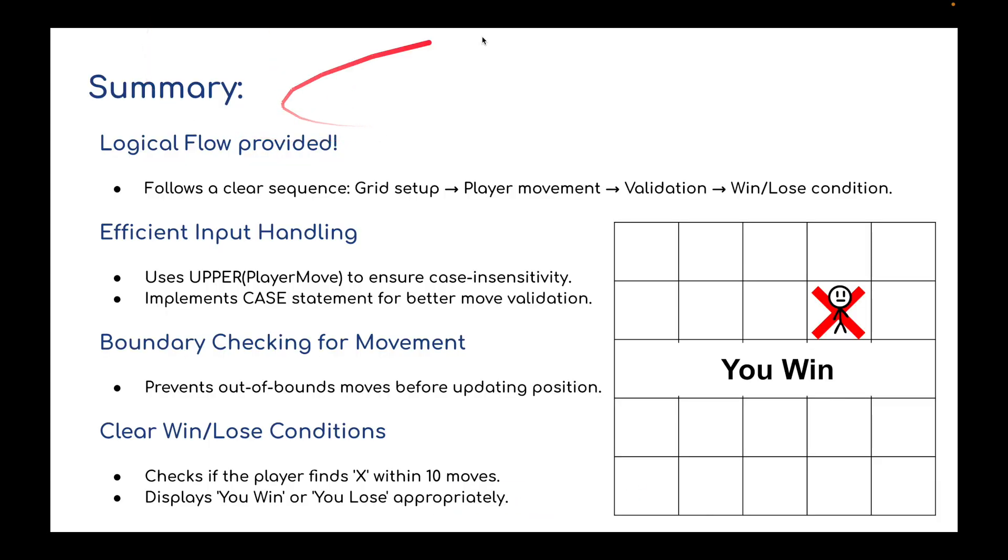Let's just summarize this. We provided a logical flow. Follows a clear sequence. The grid was set up, the player's movements were set up, validation in terms of how the player can move, and then a win and lose condition. We sorted out the validation with the input handling. We used uppercase for the player moves to ensure that whatever somebody types, it sets it to uppercase. We implemented a case statement for better movement validation. We did some boundary checking for the movement to prevent out of bounds moves before updating the position. And then we passed a win or lose condition. Basically, it checks if the player finds X within 10 moves and displays You Win or You Lose appropriately.